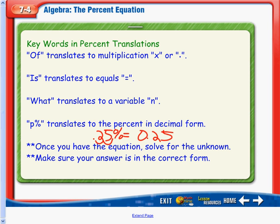Once we have the equation, we're going to have one n in there, because we're always searching for what number or what percent. So we're going to use the equation to help us solve for the unknown. Also, make sure the answer is in the correct form. So if they're asking for what percent, make sure you give them a percent and not a decimal.